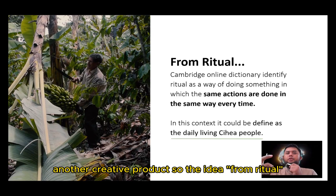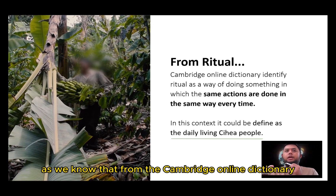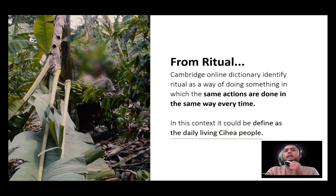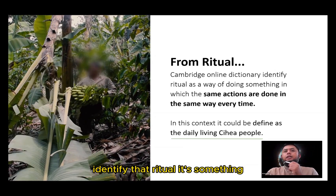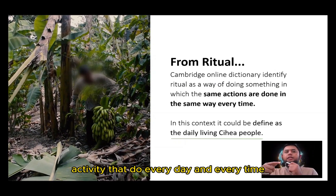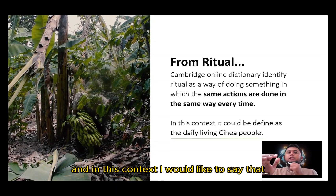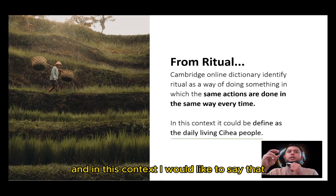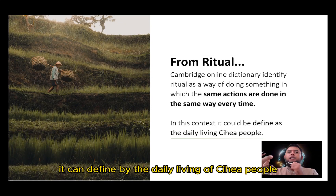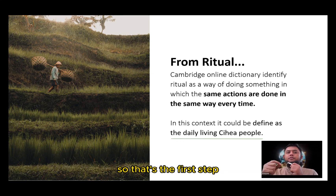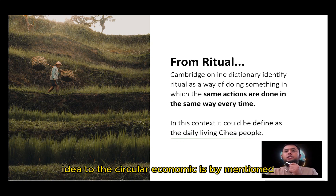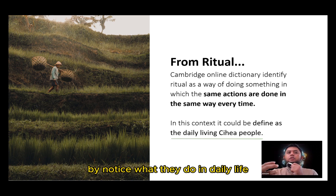The idea comes from ritual. As we know from the Cambridge Dictionary, ritual is identified as something — an activity — that is done every day and every time. In this context, I would like to say that it depends on the daily living of CHI village people. That's the first step toward the circular economy: by noticing what they do in daily life.